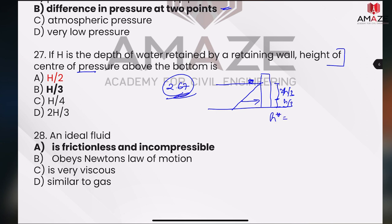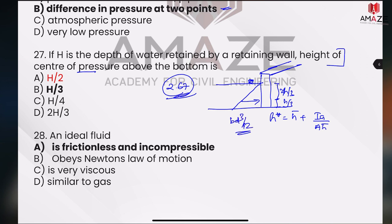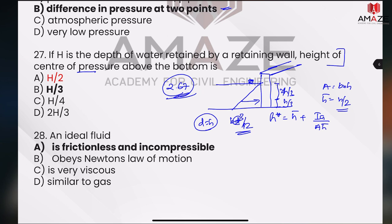So h-star is equal to h-bar plus I_g divided by A times h-bar. If we have values here, we have a retaining wall — we have a rectangle here. I_g equals b·d³ by 12. If it comes to d, the depth is h. Area A is b into h. H-bar for a rectangle is h by 2. If we take it, the answer is 2h by 3 — wait, the answer is h by 3. Where is h by 3? H by 3 is the answer.